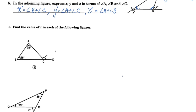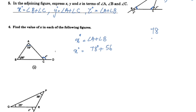Find the value of X in each of the following figures. Using the exterior angle property: the exterior angle is equal to the sum of its interior opposite angles. X is equal to angle A plus angle B, which is 78 degrees plus 56 degrees. 78 plus 56 equals 134 degrees. So X is equal to 134 degrees.